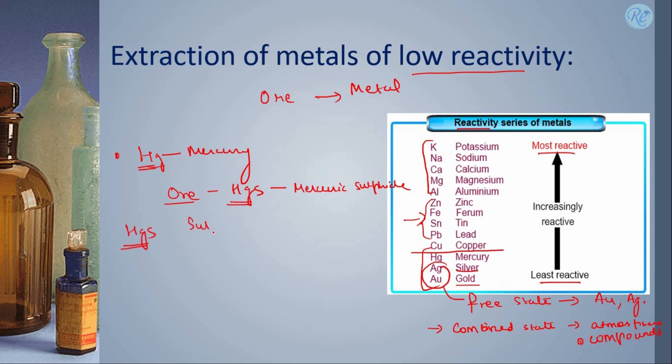Since it is found in sulphide form and we want pure mercury, can we reduce it? The answer is no. It cannot be reduced since the process of reduction of HgS to Hg is not feasible. So in the first step it is converted into HgO, its oxide form.